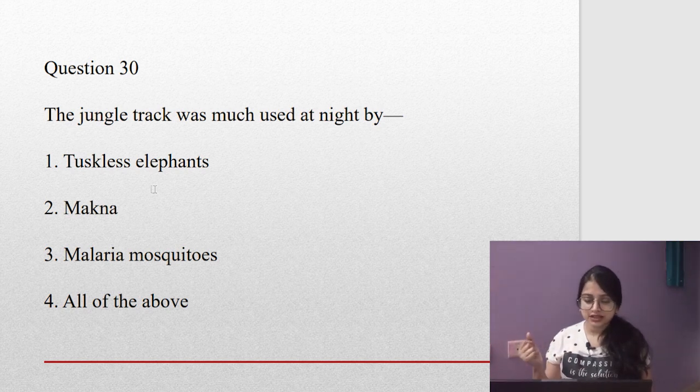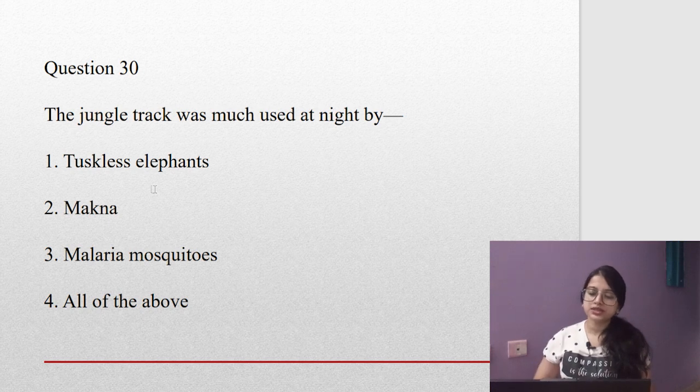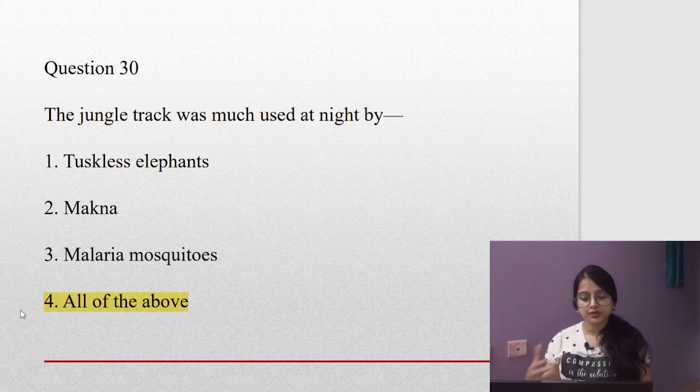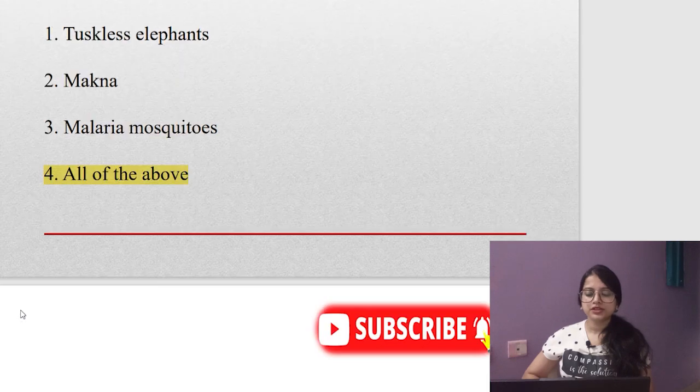Coming to the last question: The jungle track was much used at night by tuskless elephants, by makna, by malaria mosquitoes, or all of the above? Yes, it is number four, all of the above, because that jungle track was used by all. Mosquitoes were also there, the makna, the tuskless elephants. These are the same—makna and tuskless elephant. So all of the above. I hope till this much everything is clear.